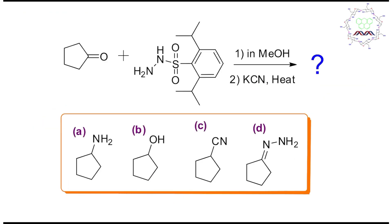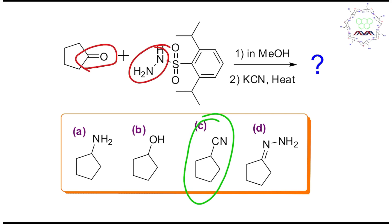So this is called a diazo compound — the nitrogen leaves. So what is the product of this reaction? Obviously option C. Now, if this problem is provided in your exam with less than 30 seconds, how can you solve it?